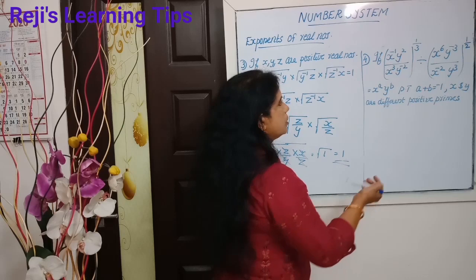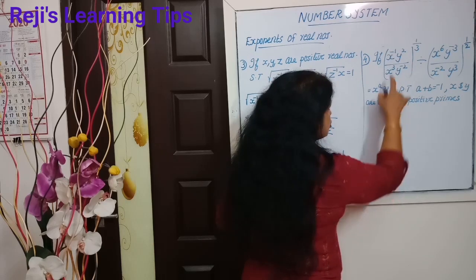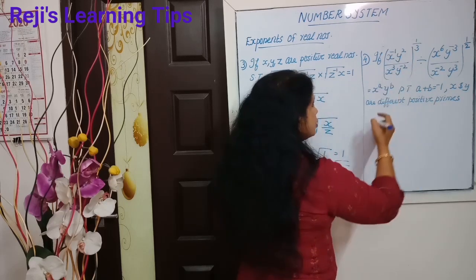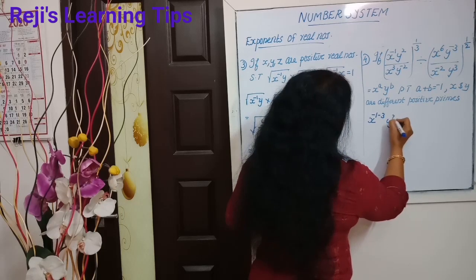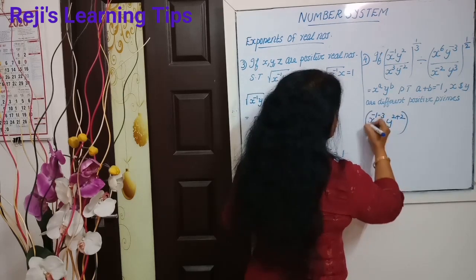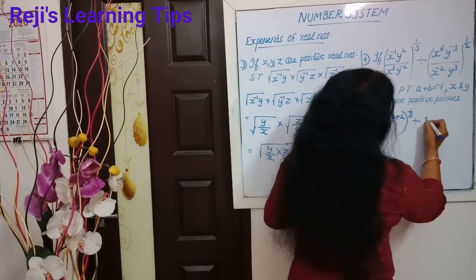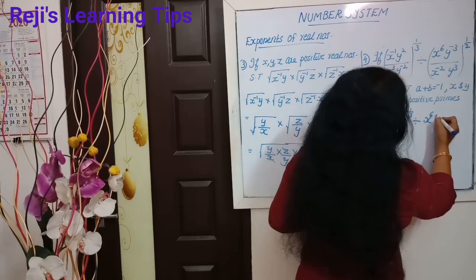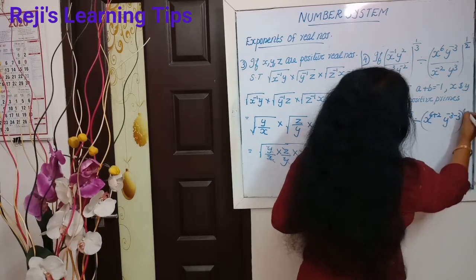Okay, then we can do it. Simple. Then we can do it. A plus b is equal to minus 1. So let's look at the question: y raised to minus 1 minus 3. Then y raised to 2, then y raised to minus 2 means we can write plus 2, y raised to plus 2, the whole raised to 1 by 3. Then y raised to minus 2, then y raised to minus 3, minus 3, the whole raised to 1 by 2.